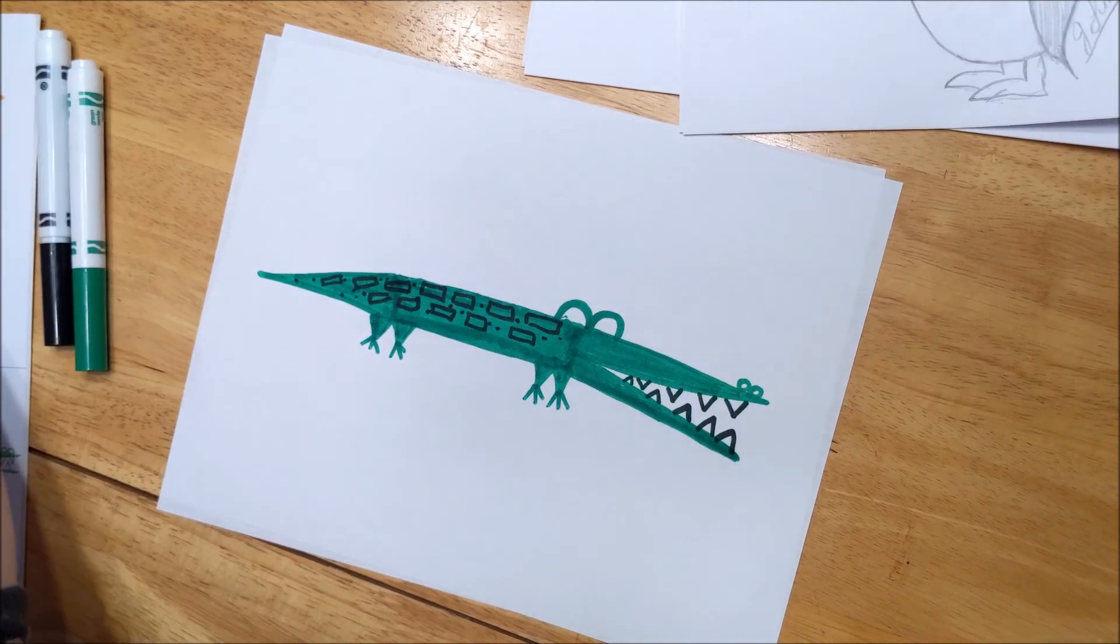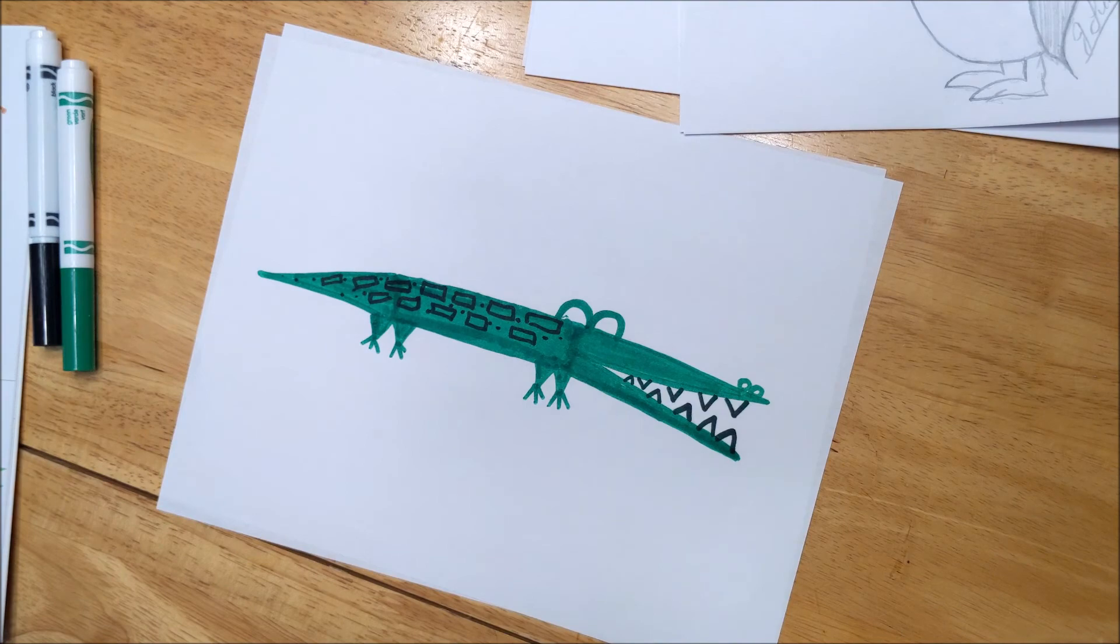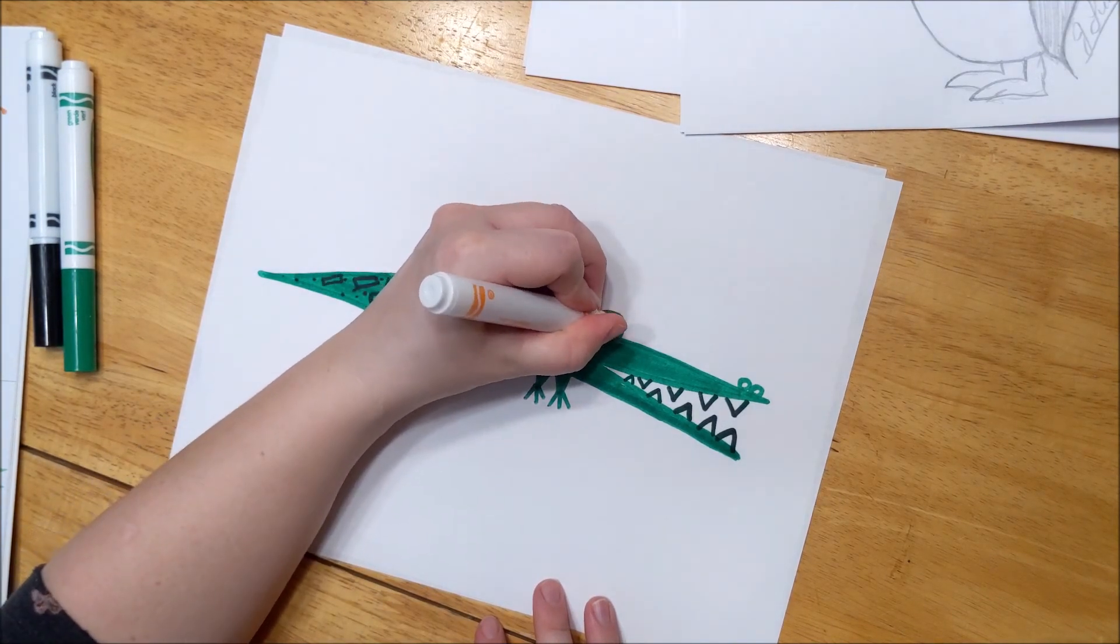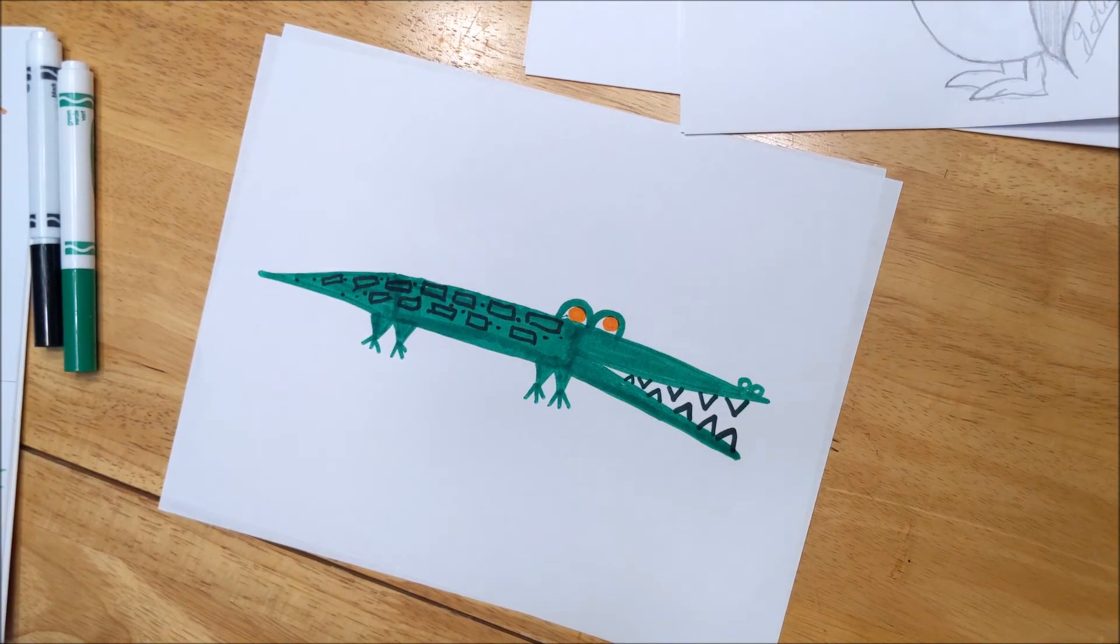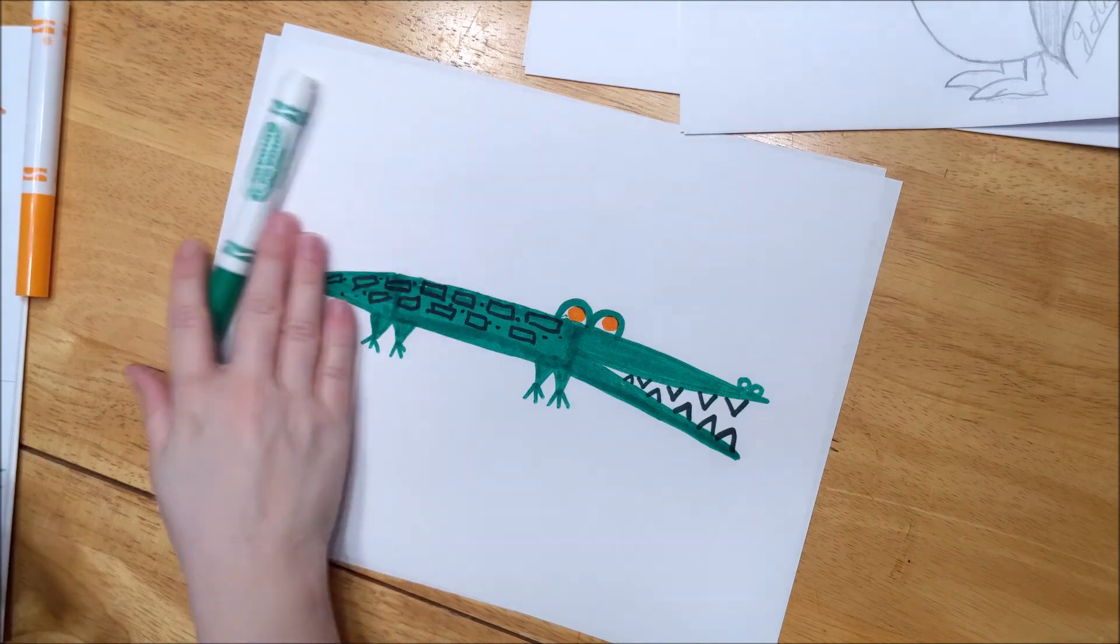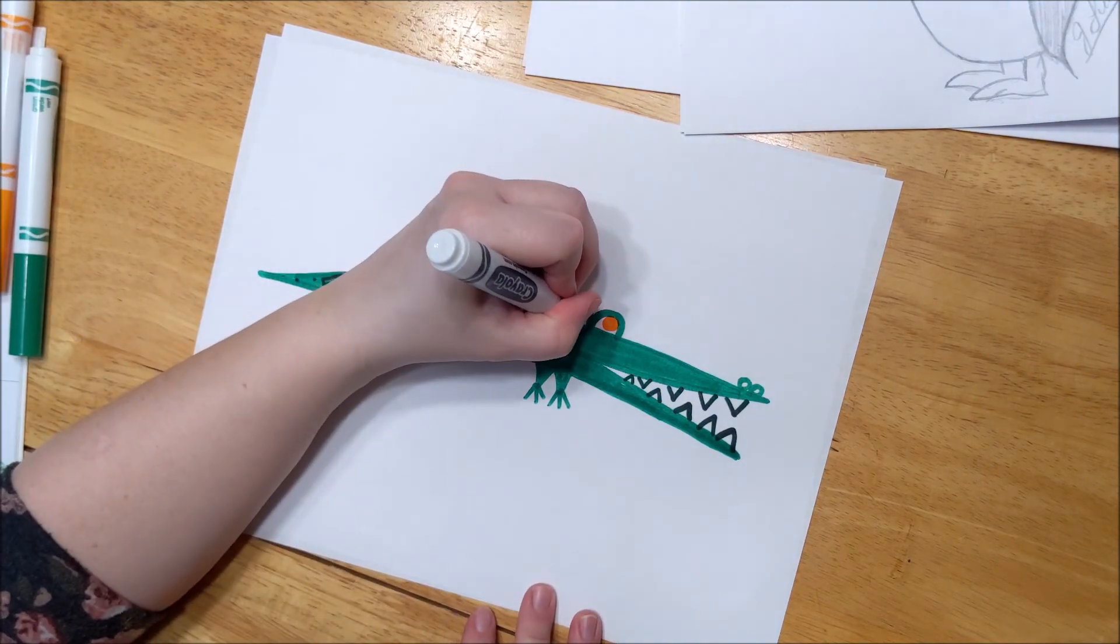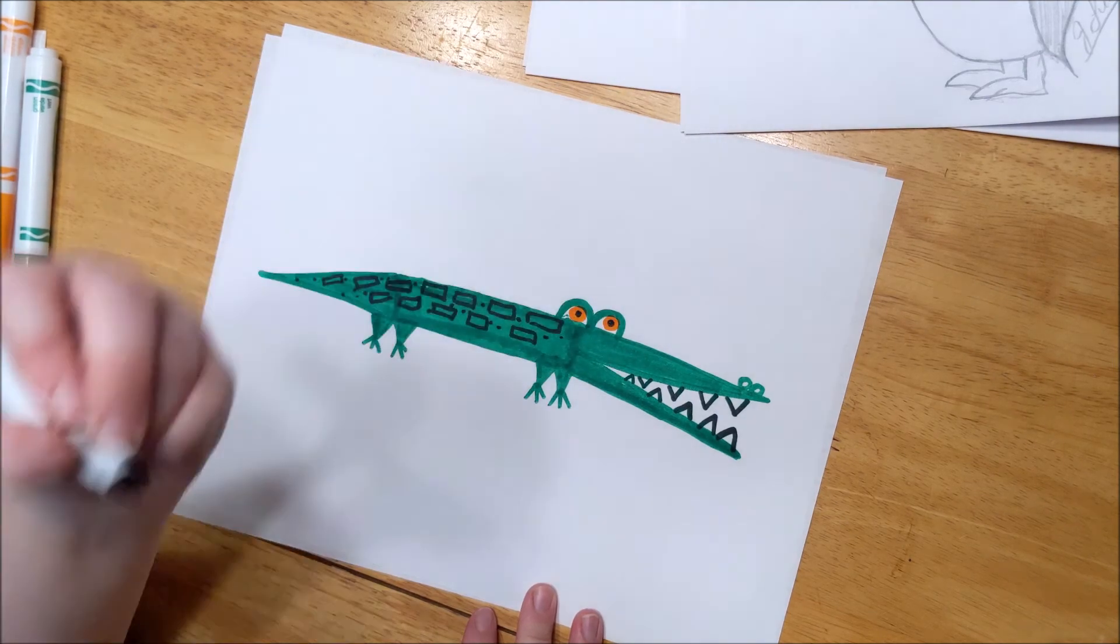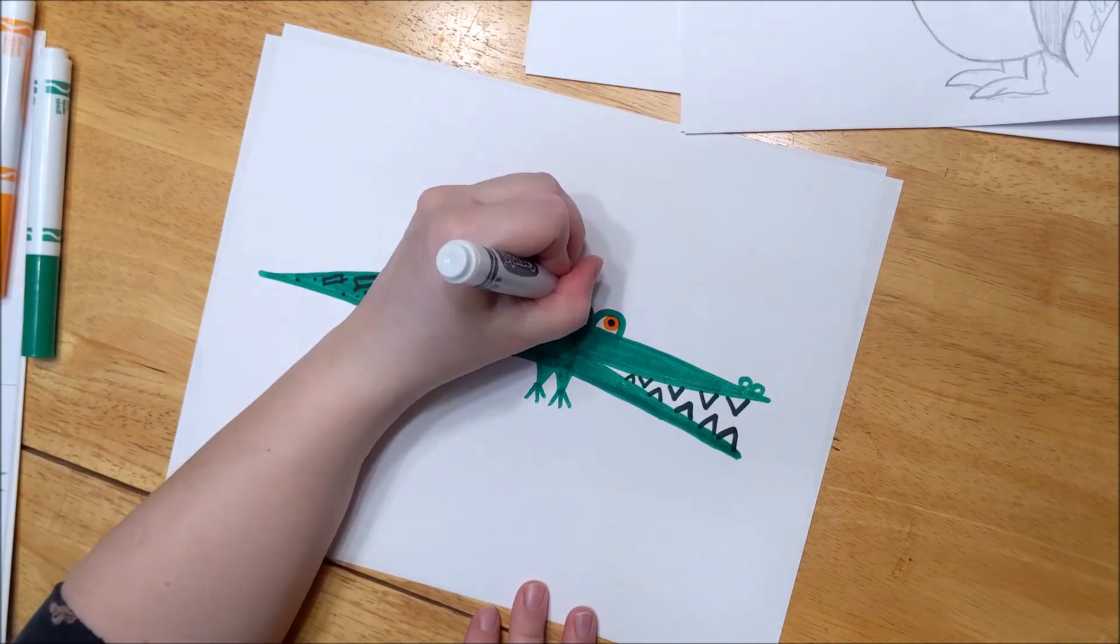And then I'm going to take some orange for his eyes and make circles in here, right where we made some spaces. Right in there. And then we're also going to put little black dots within the orange. Don't cover up all the orange. It's like right in the middle if you want to give him some eyebrows.